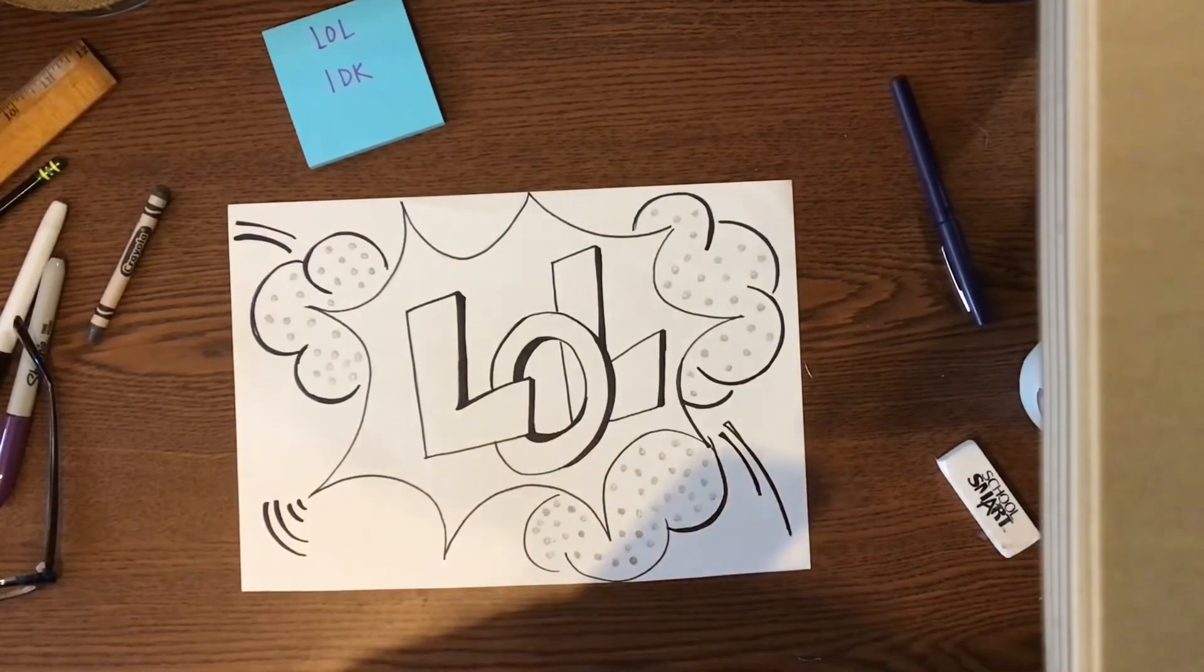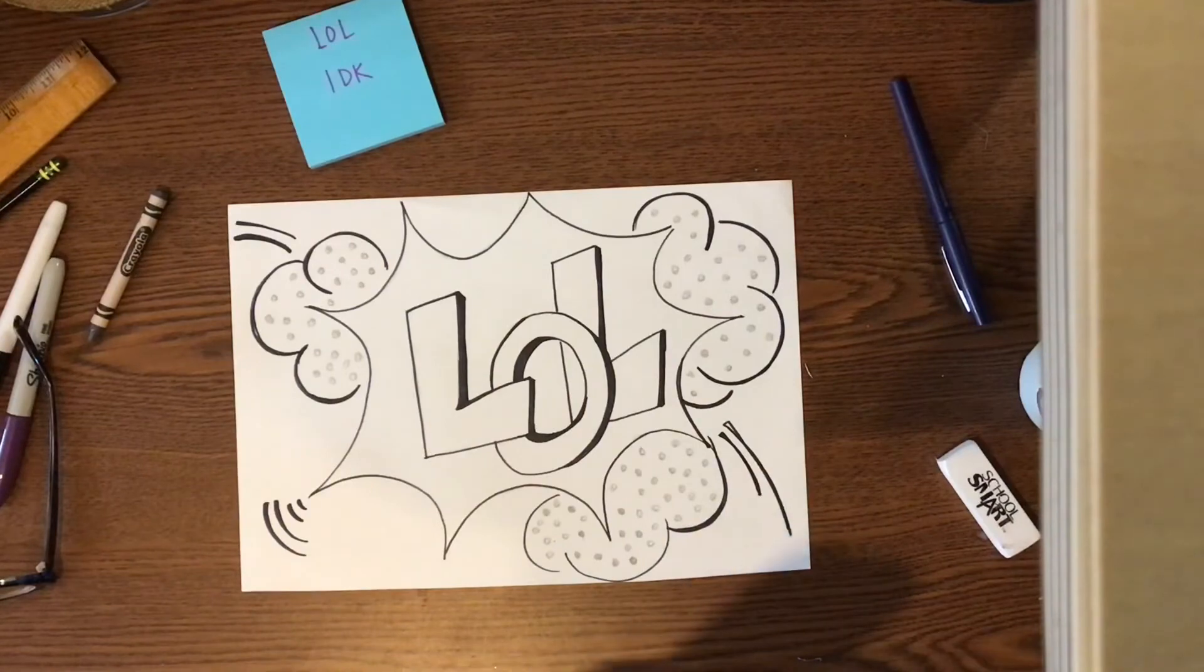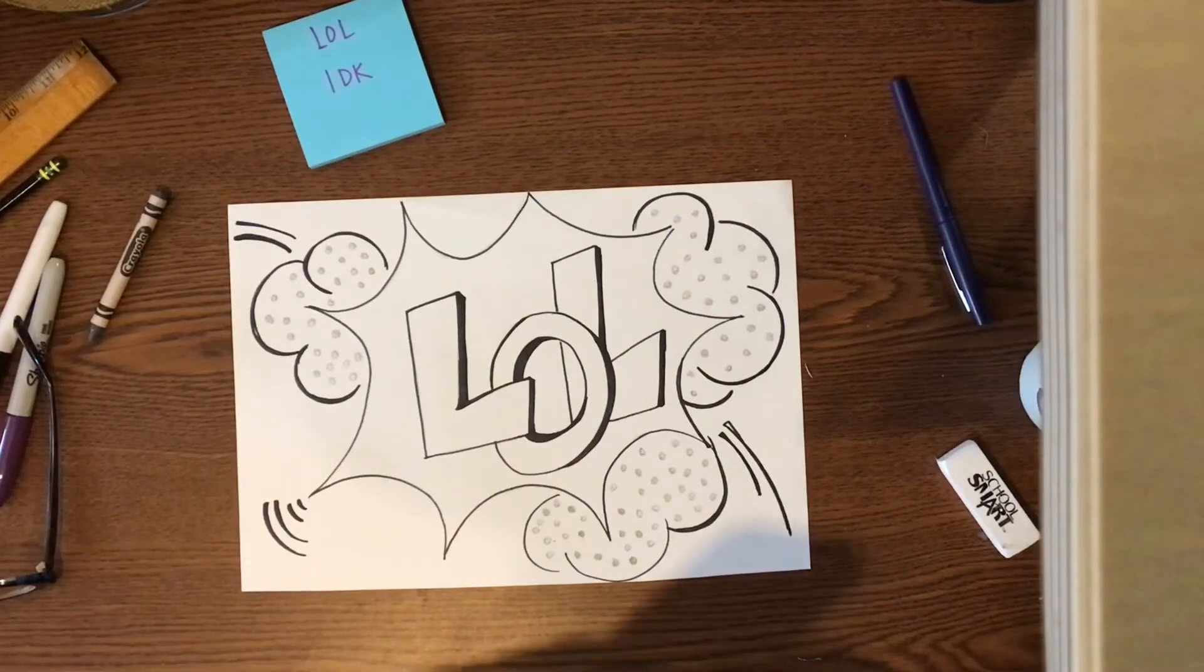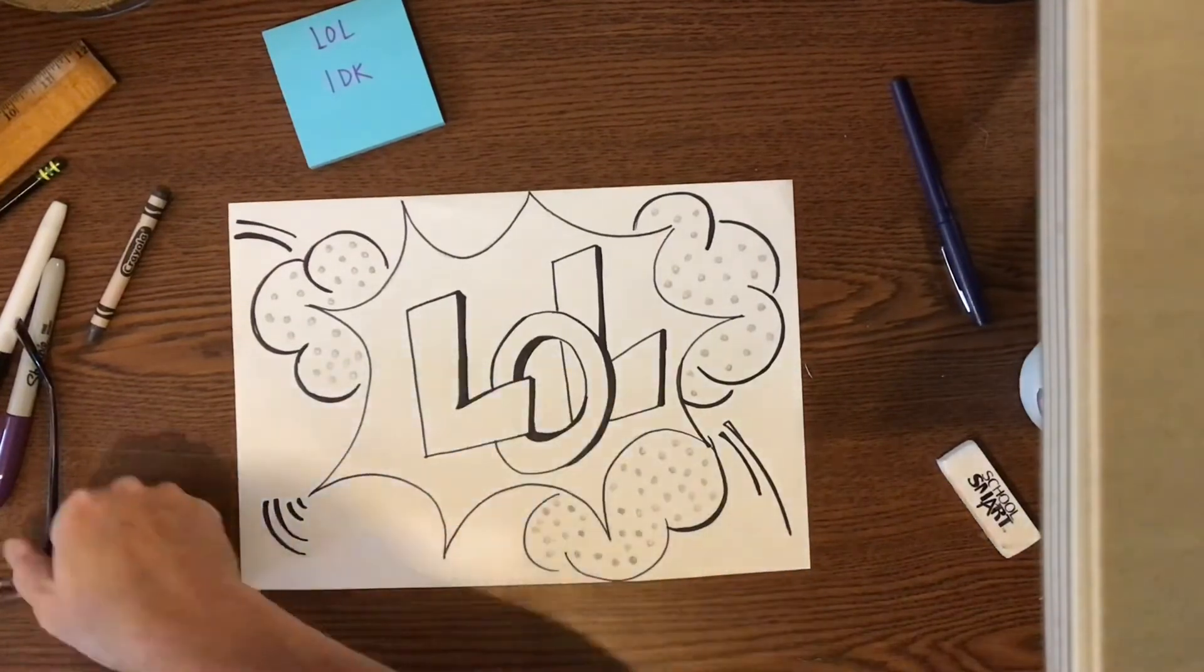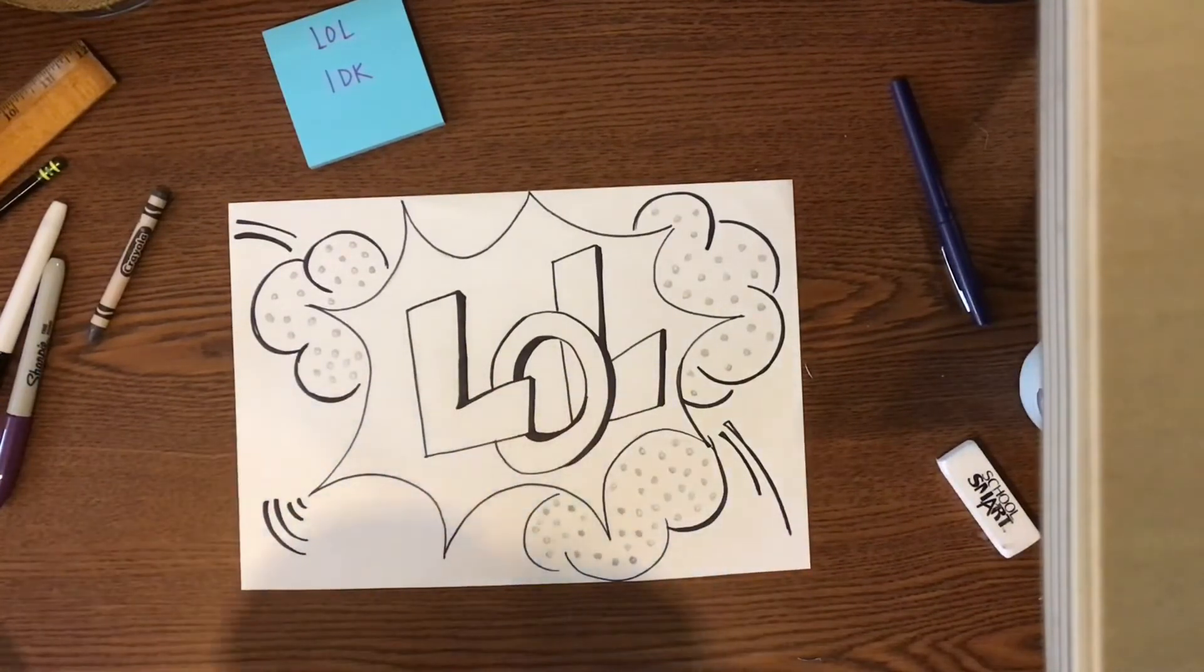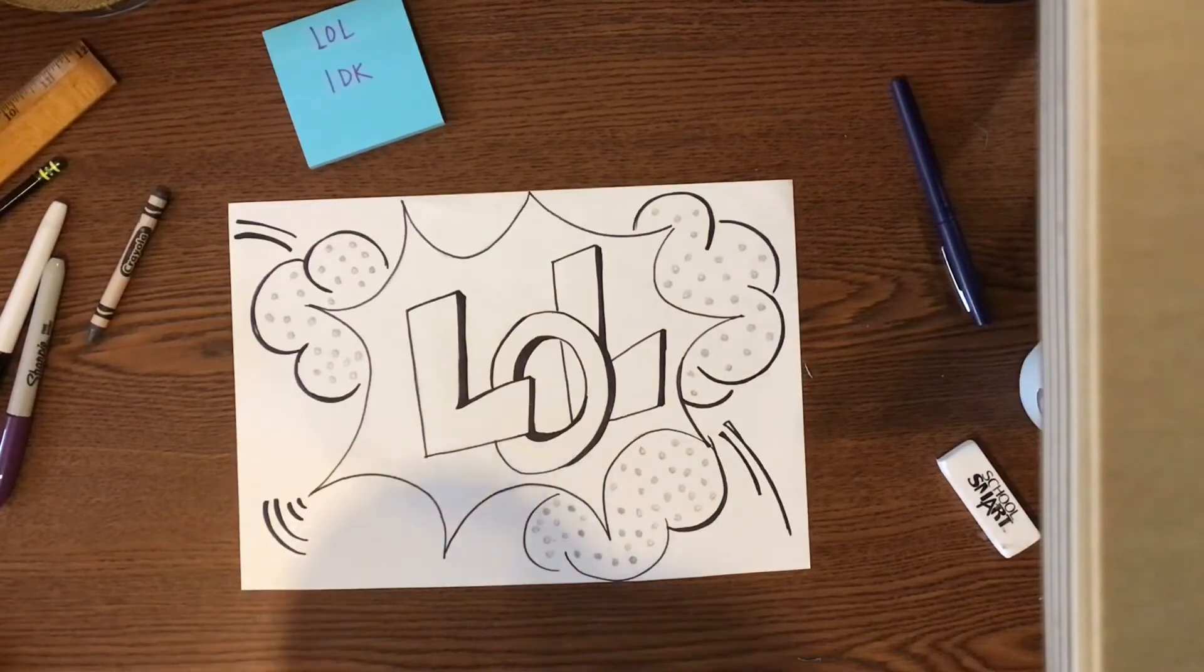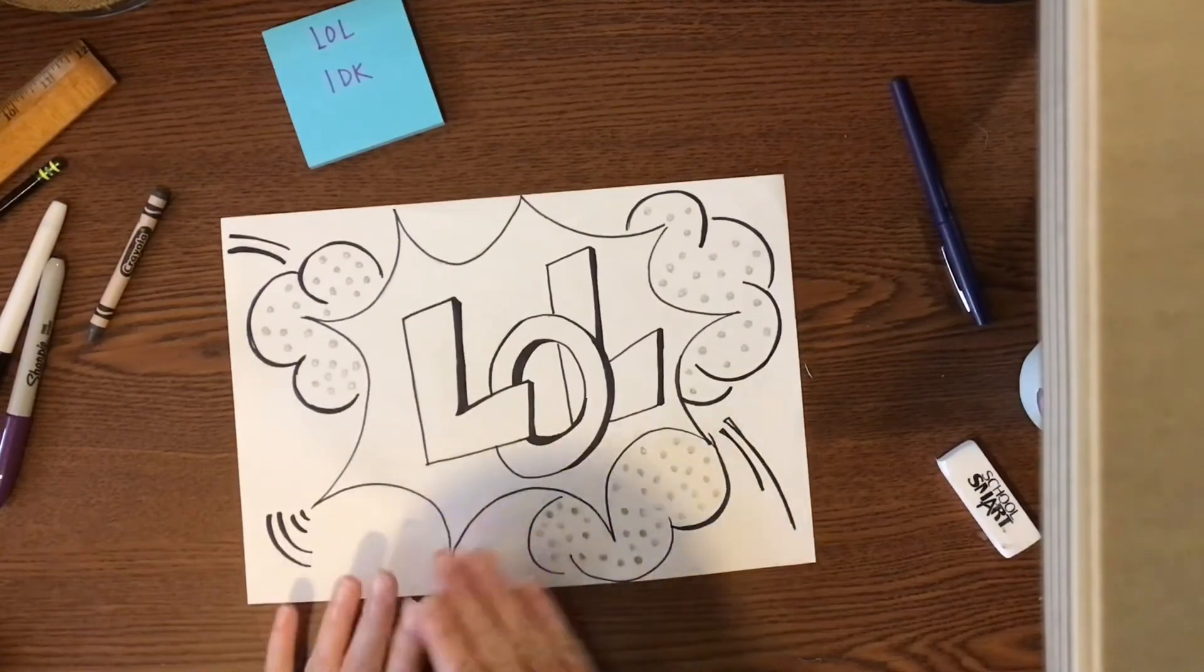Here we are. We have our LOL. I've got everything outlined. I've started adding some texture. The texture that I have started is the dots, the dots in the background, kind of emulating a newspaper and he would do different layers. So each layer had to be different.